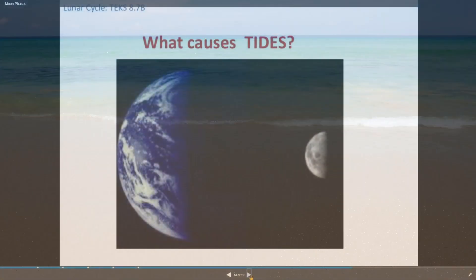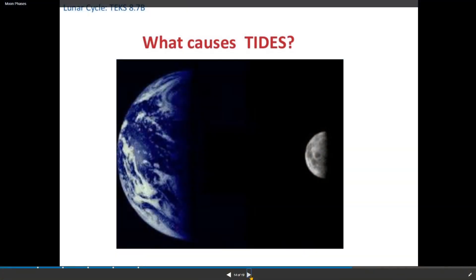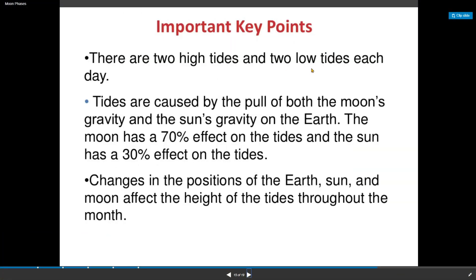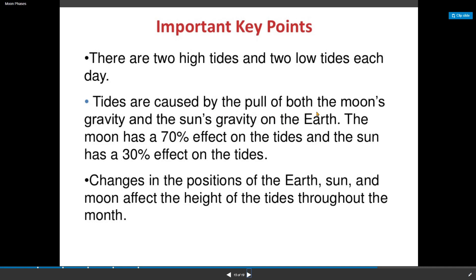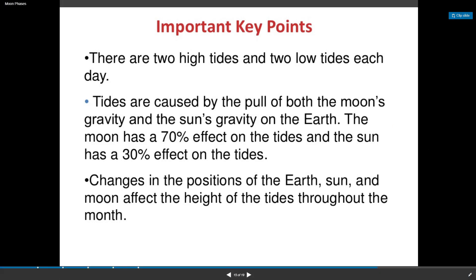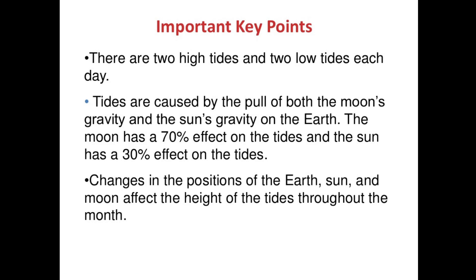So what causes tides? There are two high tides and two low tides each day. Tides are caused by the pull of both the moon's gravity and the sun's gravity on the earth. The moon has a 70 percent effect on the tides and the sun has only a 30 percent effect on our tides.